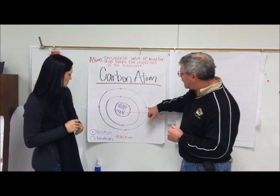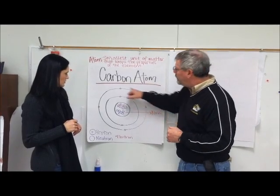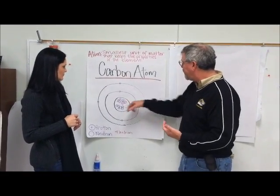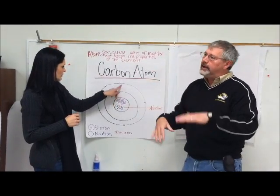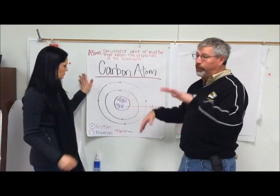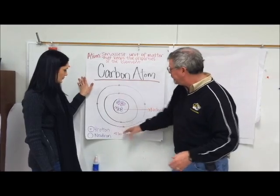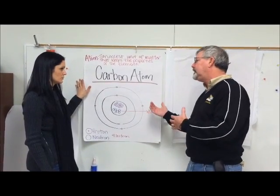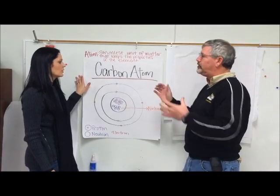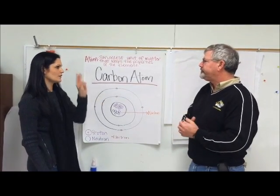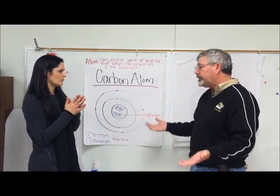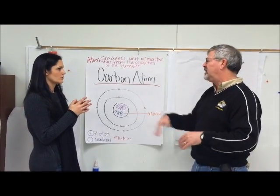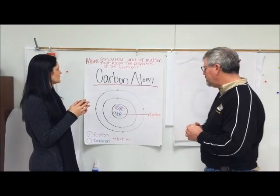What are these things floating around on the outside that are smaller? Well, they're negative signs, so those are electrons. And there's an equal number of electrons as there are protons because they've got to balance out. If you've got six protons, you're going to have six electrons, because otherwise it would be either too much negative or too much positive. So the negative and the positive have to equal out.